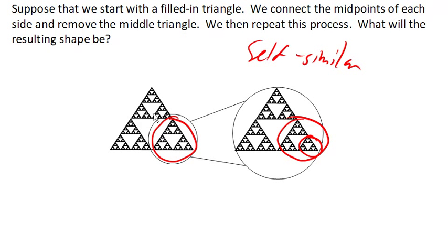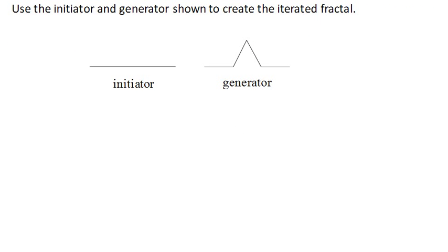Now, we can generate self-similar shapes using an idea called initiators and generators. So the idea is the initiator, in this case, is a line. And the generator says, at each step, replace each instance of the initiator with a scaled copy of the generator.